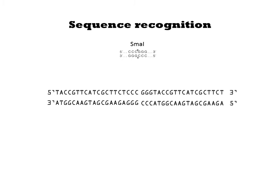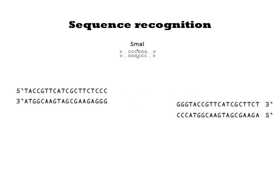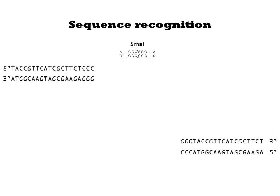Some enzymes, such as SmaI, cut at the same place on both strands, resulting in blunt ends.